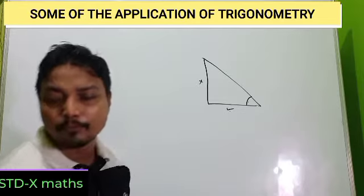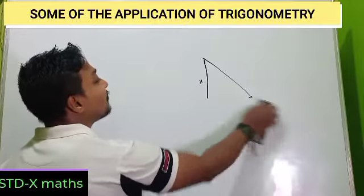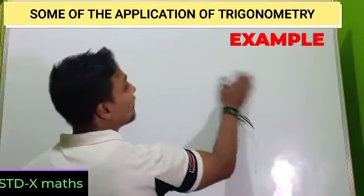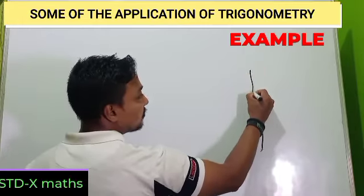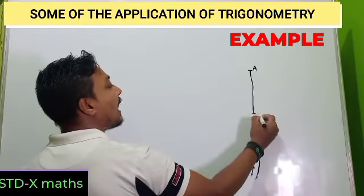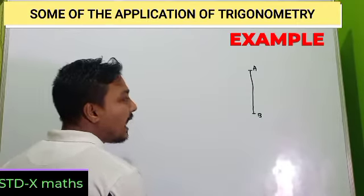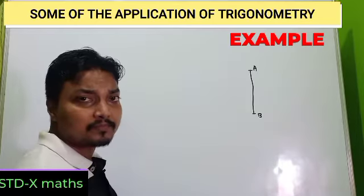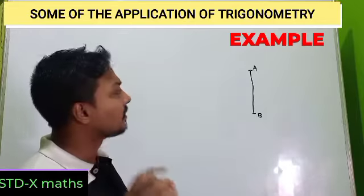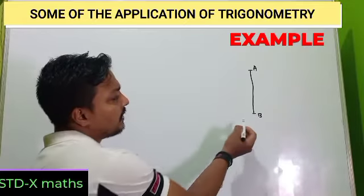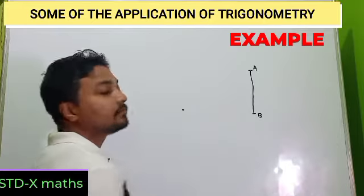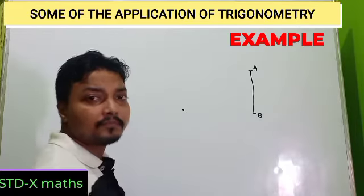Now I am giving you one example. Suppose this is a mountain and its height is not known to you. Suppose the height of the mountain is AB, and it is not known to us. Normally, by using a rope also one cannot measure the height of the mountain. Suppose your position is 5 km from the foot of the mountain.